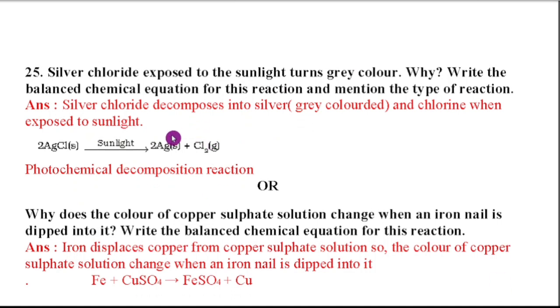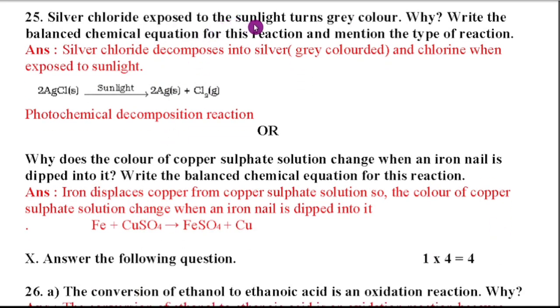The next one is 25th question. Silver chloride exposed to the sunlight turns gray color. Why? Write the balanced chemical equation for this reaction and mention the type of reaction. So silver chloride decomposes into silver, that means gray color, and chlorine when exposed to sunlight. So this is the balanced chemical equation. Because here photochemical decomposition reactions will take place. So that type of reaction only we have written. So easily you will get three marks.